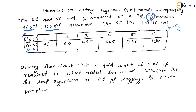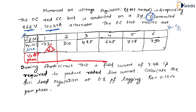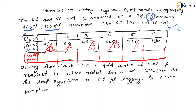We will add one more row to the table called VOC in phase voltage form. All values in the original VOC column will be divided by √3. So dividing each value by √3: 173/√3 gives roughly 100 volts.